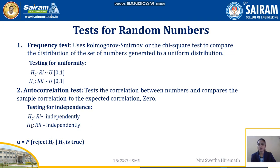For the autocorrelation test, we also have two hypotheses: H0 states that the set of random numbers are distributed independently, and H1 states they are not distributed independently. Once both tests are done, we proceed to the acceptance or rejection decision, which is based on the value of alpha. If the resultant value is equal to or less than alpha, we accept the hypothesis; otherwise it is rejected.